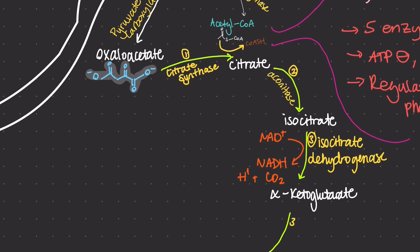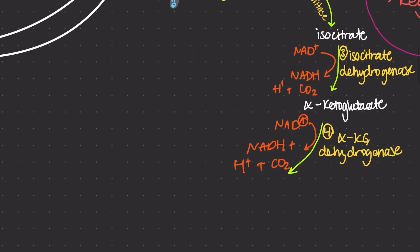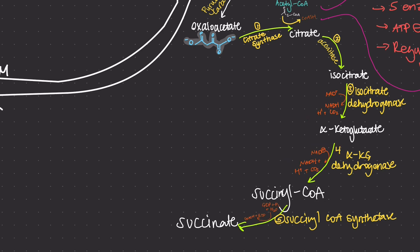In the fourth step, alpha-ketoglutarate is further oxidized to form succinyl-CoA, again releasing CO2 and reducing NAD+ to NADH. Then, succinyl-CoA is converted to succinate, producing one molecule of GTP in the process. Then, succinate is oxidized to fumarate, reducing FAD to FADH2.